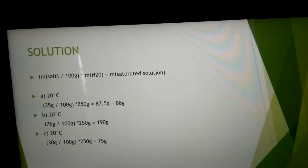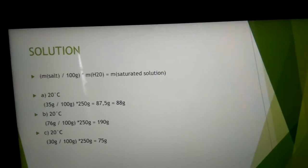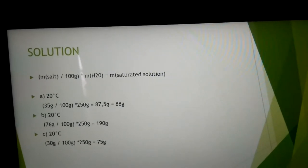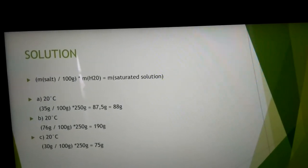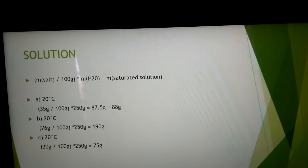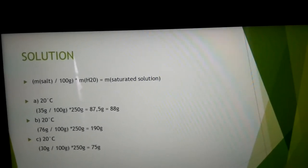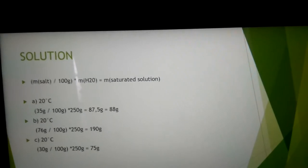So for Part A, you divide 35 grams through 100 grams and multiply this with 250 grams. So you get a mass of 87.5 grams sodium chloride in a saturated solution.